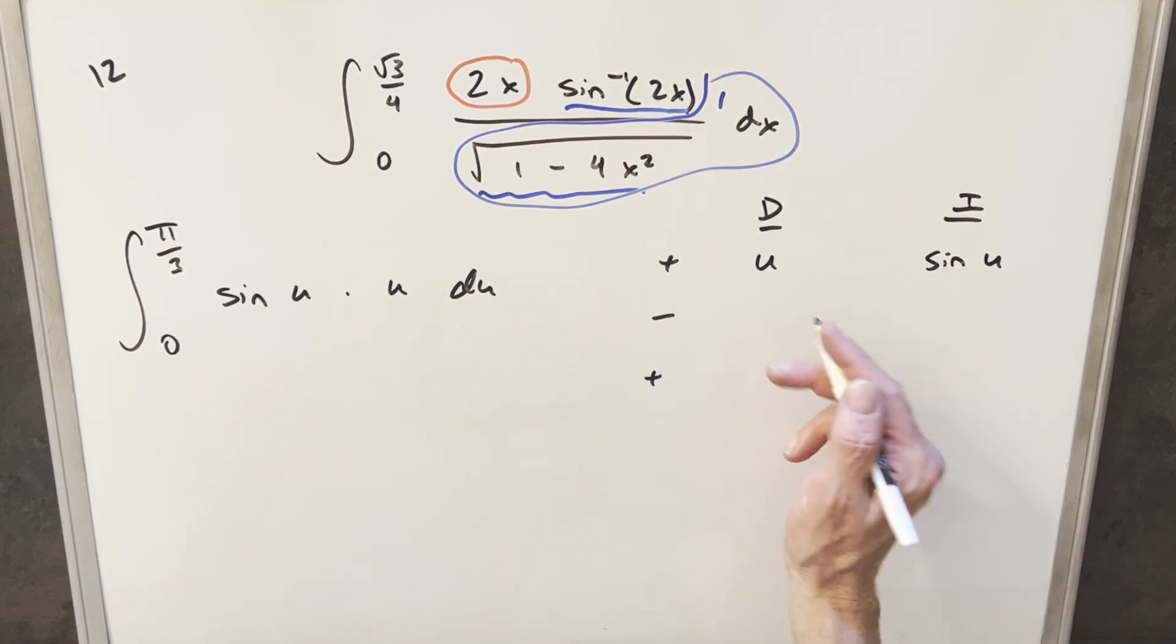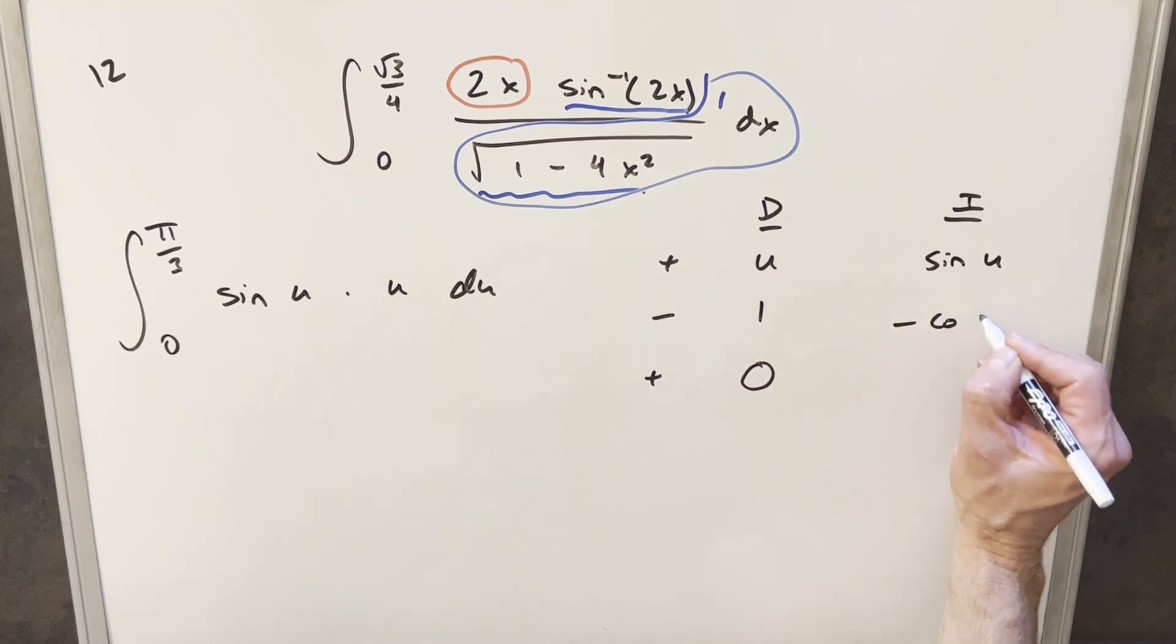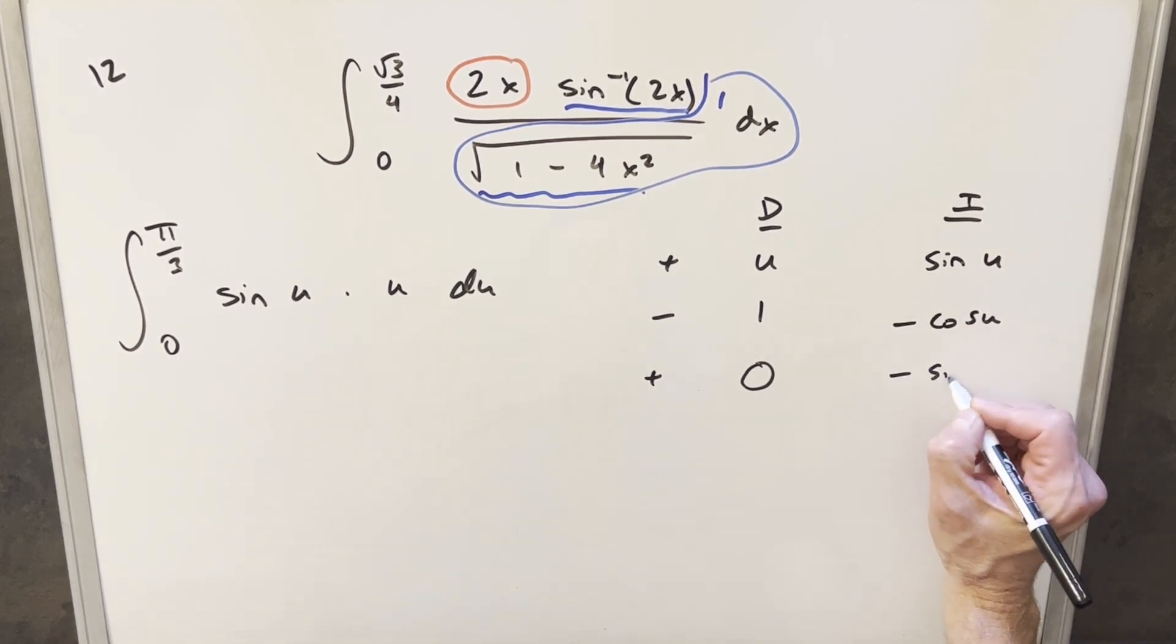When I take a derivative of u, we get 1. Take a derivative again, we have 0. Here we'll integrate sine of u and we have minus cosine of u. Integrate one more time and we've got minus sine of u.